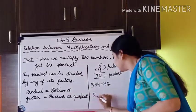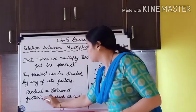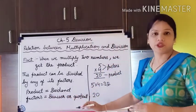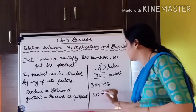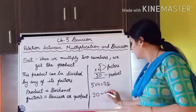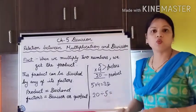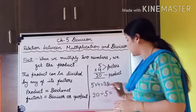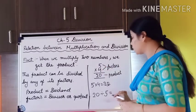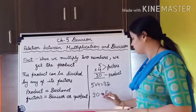This product will become the dividend, so we will write 20 here. Factors will become either divisor or quotient. First we are taking the first factor, 5, as the divisor. So we need to find out: 20 divided by 5 equals what? We write 20 under the bracket, then write 5 as divisor.